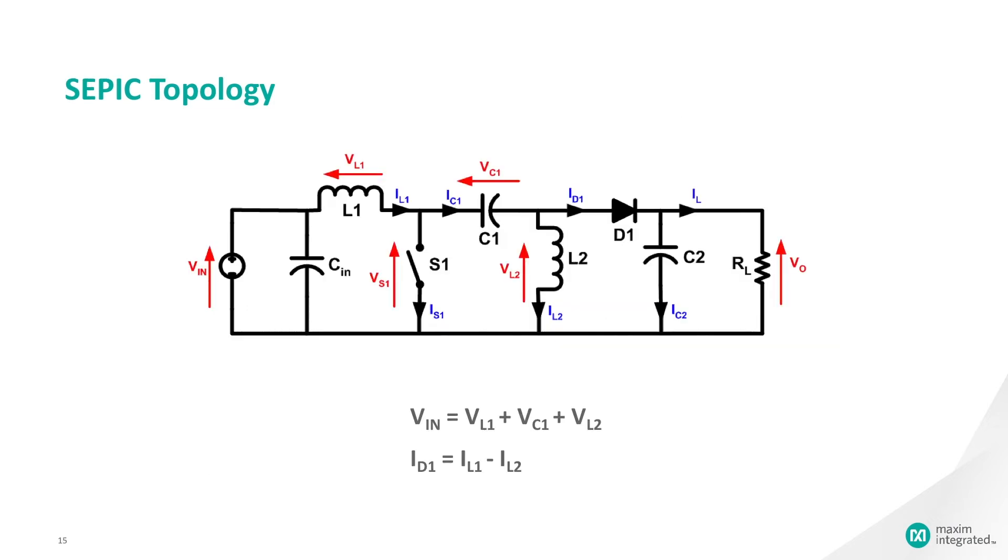During a SEPIC's steady-state operation, the average voltage across capacitor C1, noted here as VC1, is equal to the input voltage, VN. Because capacitor C1 blocks direct current, the average current through IC1 is 0, making inductor L2 the only source of DC load current. Therefore, the average current through inductor L2, or IL2, is the same as the average load current and hence independent of the input voltage.